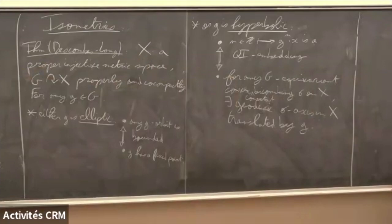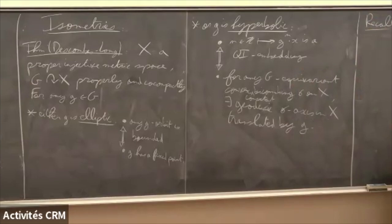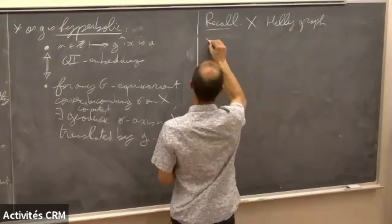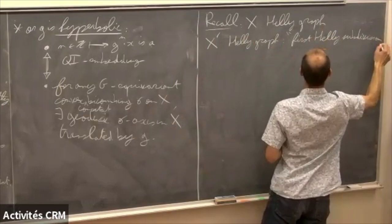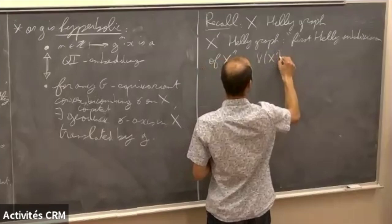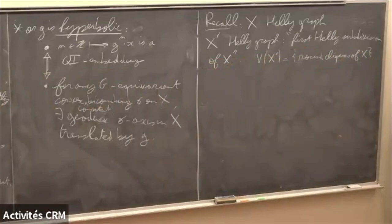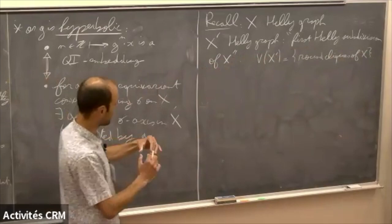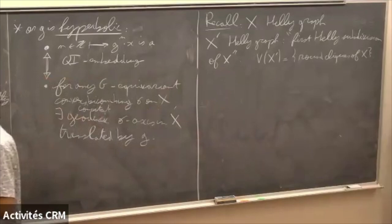We also have a very nice dichotomy for heli graphs. At the end of my lecture yesterday, I recalled that X is a heli graph. I defined X', the heli graph, which I want to call the first heli subdivision of X. The vertices of X' are round cliques — a round clique is a clique which is an intersection of balls. It should be thought of as really a subdivision: if you take a cube, the set of round cliques will essentially correspond to the first barycentric subdivision of a cube.